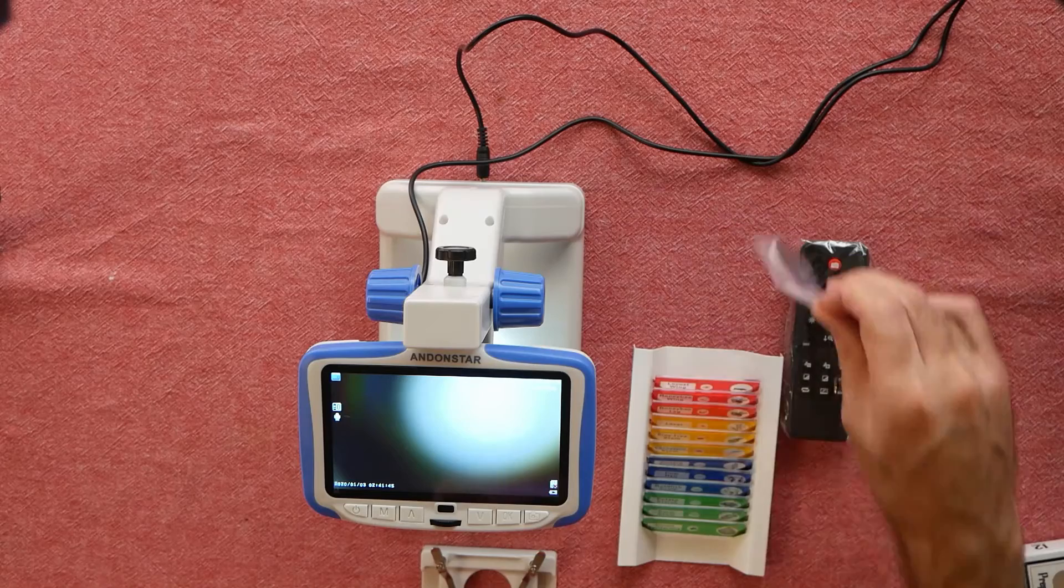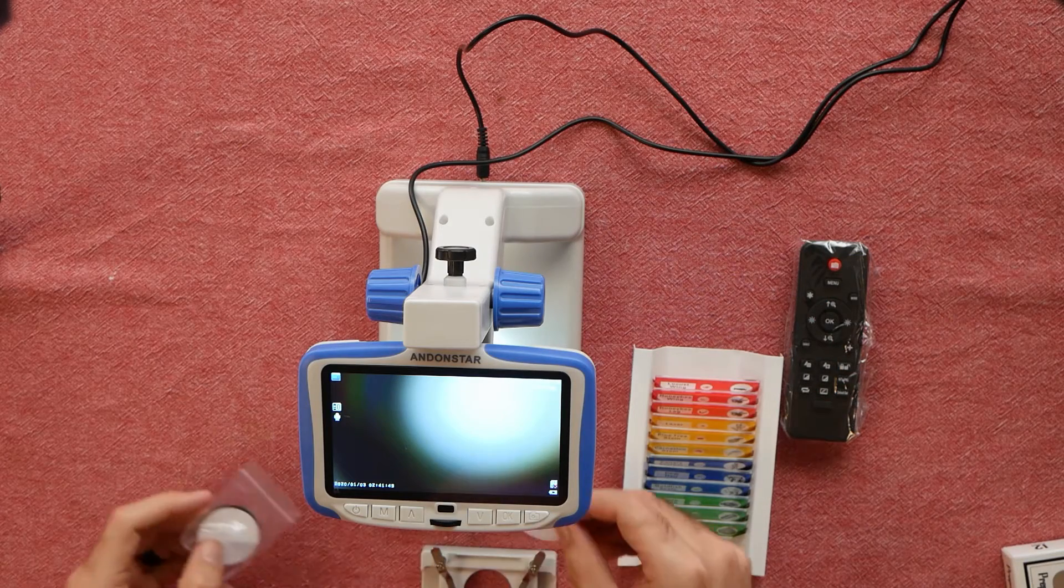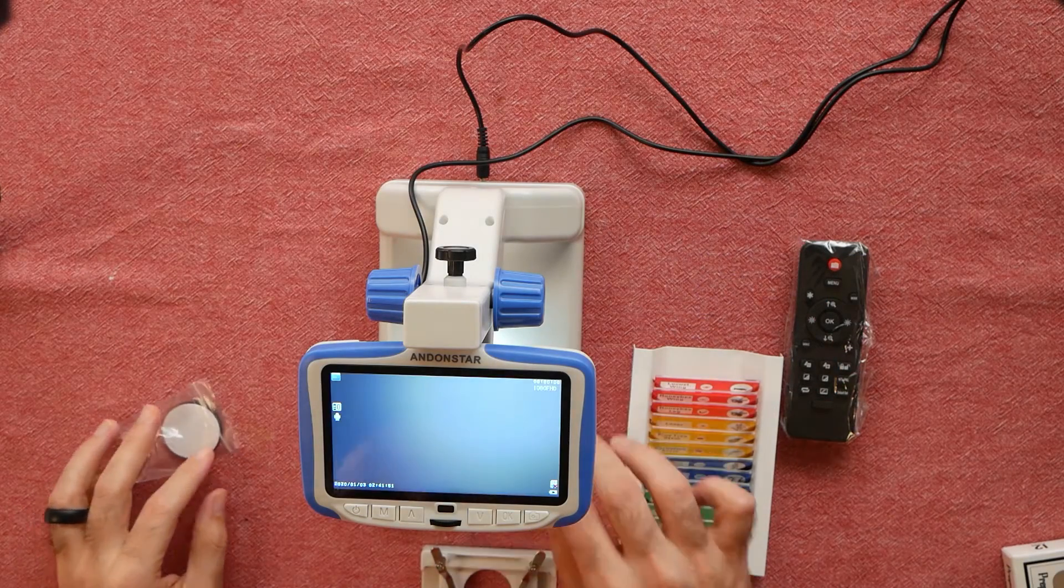So now the microscope is powered on. Let's start with the translucent light barrier, and we'll take a look at one of the slides using the movable brick.